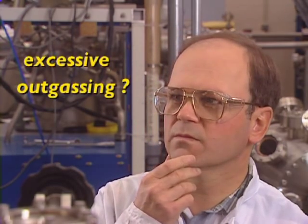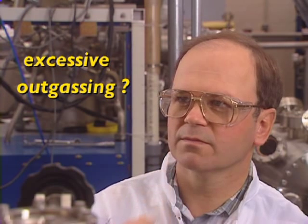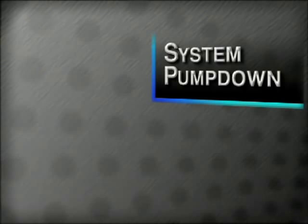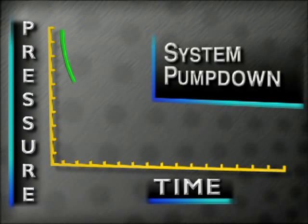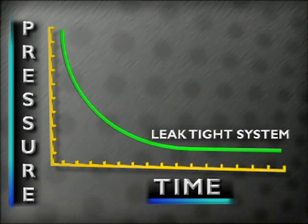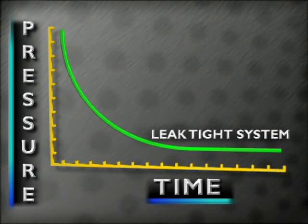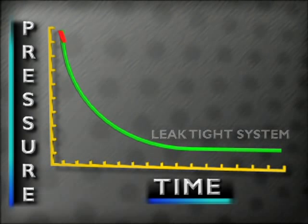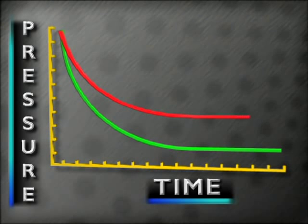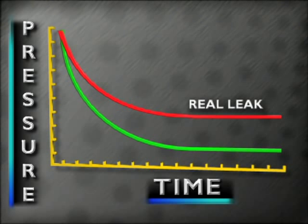The types of leaks include a real leak, an internal leak, or a leak due to excessive outgassing. During the evacuation of the vacuum chamber — a pump-down — the pressure will drop to a certain point in a given amount of time. If a real leak exists, outside air continuously enters the vacuum chamber through an opening. During a pump-down, the pressure will not fall as fast or to the same ultimate pressure as when the chamber is leak tight.